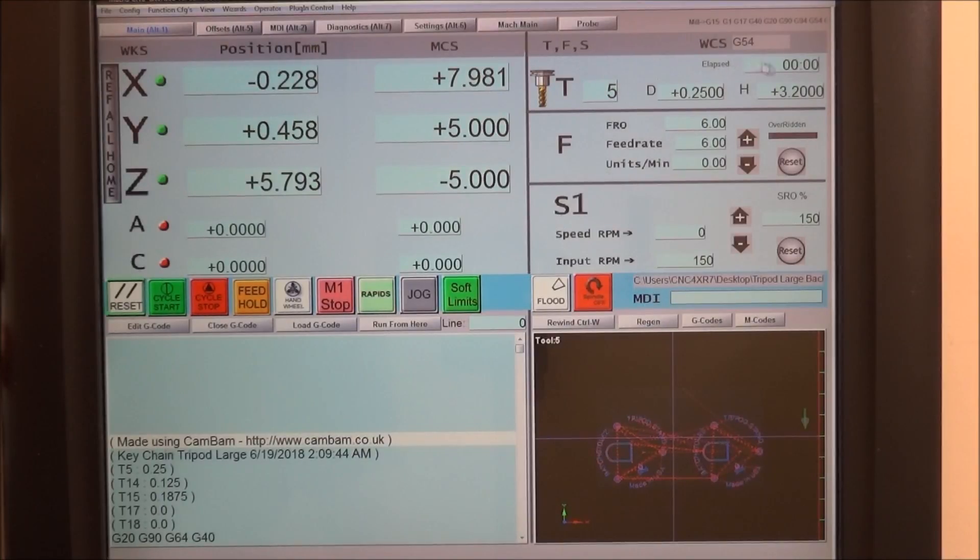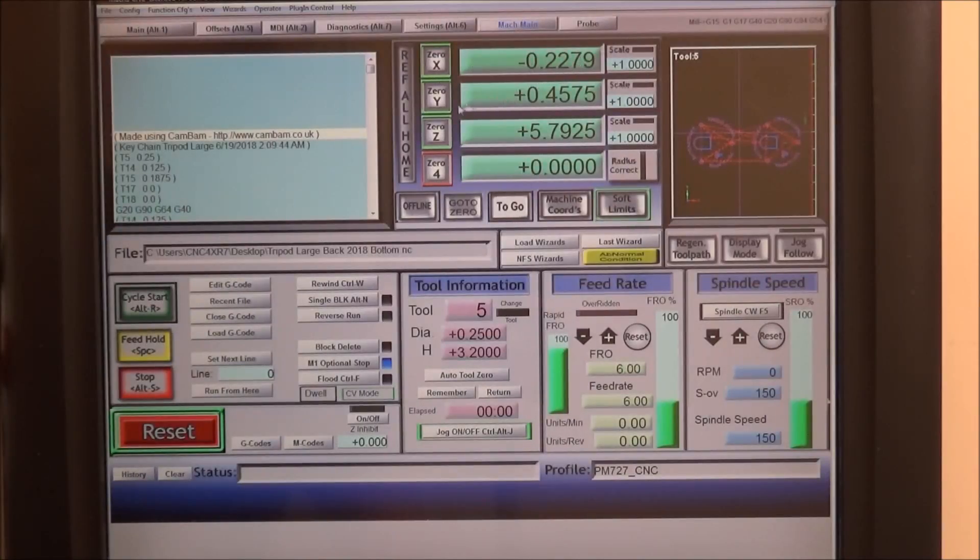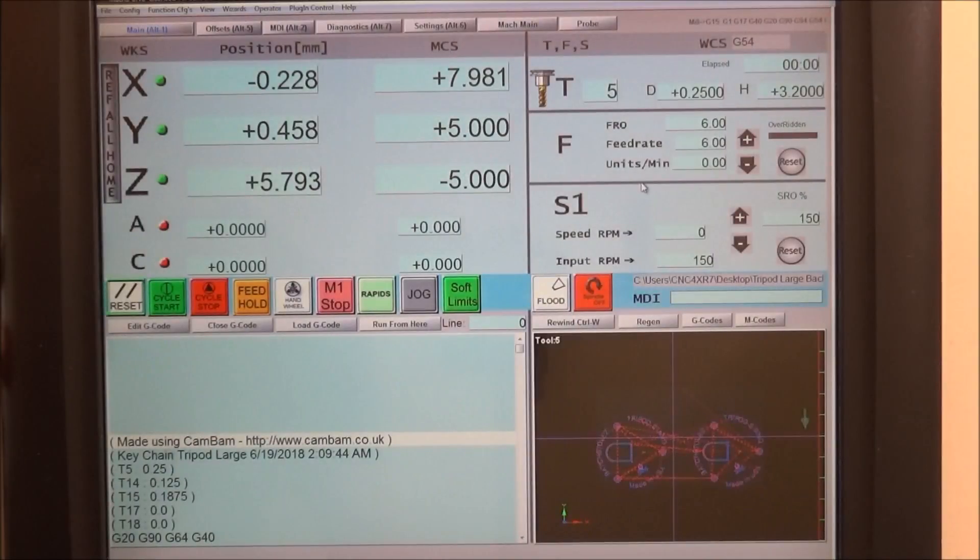We've got our tool information here, our lapse time, whatever work coordinates we are currently working in. This is something that wasn't on the standard Mach screen. I think it's very important to have that, especially if you're running in different work coordinates, G55, G56, that sort of thing.